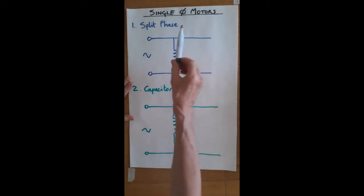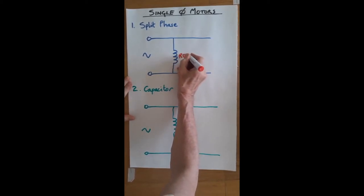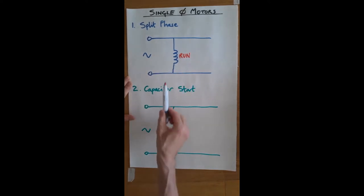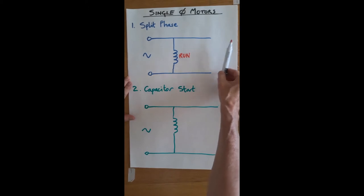If I do a very quick run through, this will be the run winding for this type of motor and it's permanently connected in the circuit. I'm going to run through a range of different types of motors. Sometimes the next winding is in circuit, sometimes it's switched out of circuit.